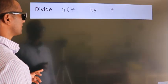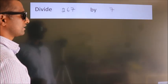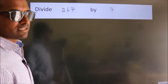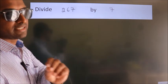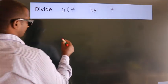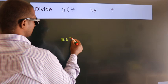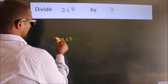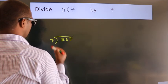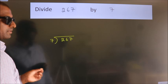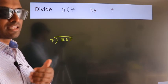Divide 267 by 7. To do this division, we should frame it in this way. 267 here, 7 here. This is your step 1.